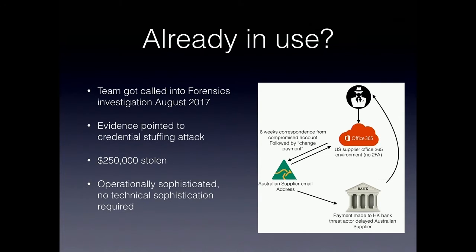What was peculiar wasn't the technical sophistication — it was the operational sophistication. The correspondence maintained was very specific; the language used was consistent with the victim's actual method of talking via email. It turned into a 'hey, we need you to update your payment details and send us a quarter of a million dollars to our new corporate bank account in Hong Kong.' With very little technical sophistication, this threat actor impersonated someone and walked away with about a quarter of a million dollars Australian.